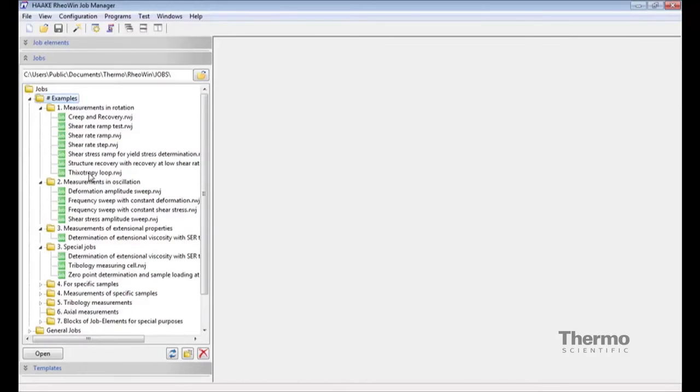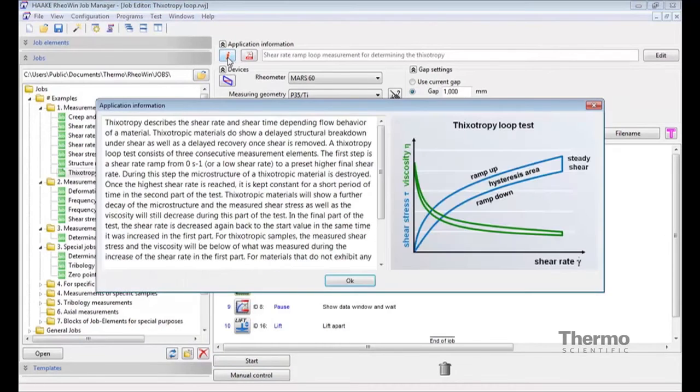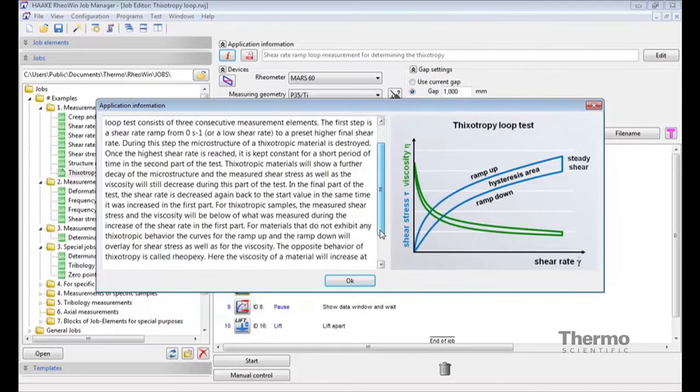Looking into a procedure like the classic thixotropy loop in more detail, you can see that precise application information is linked to the procedure itself, including a clear description in writing as well as graphically.